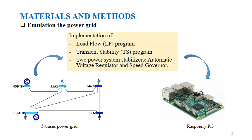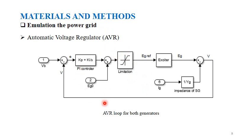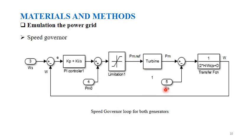In parallel to the experimental prototypes, we emulate the high-voltage utility grid by a five-bus power grid running in real time on the Raspberry Pi 3. It contains two generator buses — south is a PV bus and north is the slack bus — and three consumption nodes: lake, main, and element. To compute the power flow through the grid and the voltage at all buses, we implemented the load flow and transient stability programs on the Raspberry Pi 3. Moreover, we implemented two power system stabilizers: an automatic voltage regulator to stabilize the voltage magnitude, and a speed governor to stabilize the speed of the power plant synchronous generator.